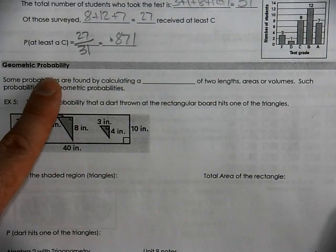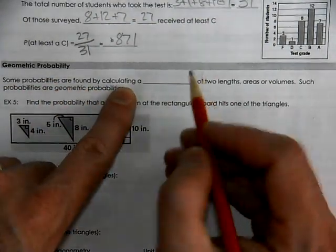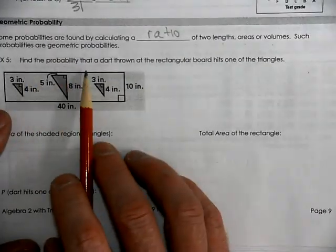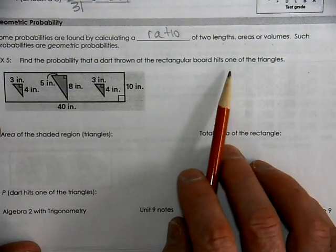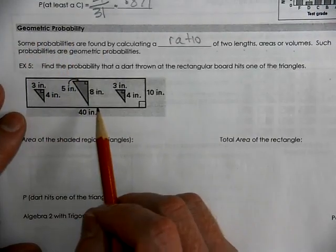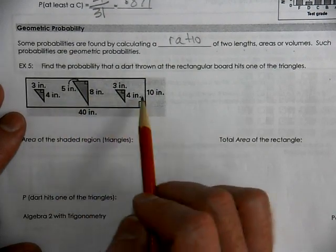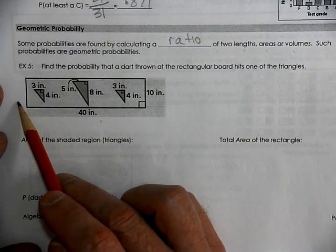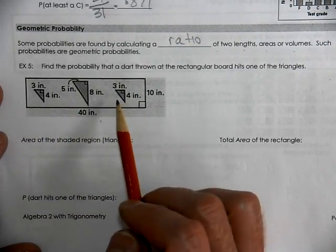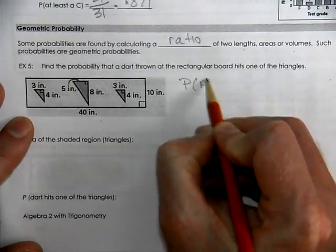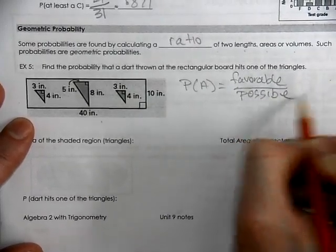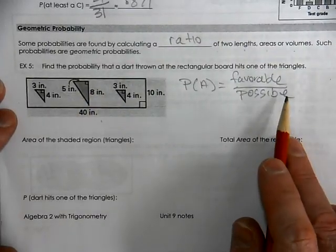Next we have geometric probability. Some probabilities are found by calculating a ratio of two lengths, areas, or volumes. So we're going to find the probability that a dart thrown at a rectangle board hits one of the triangles. Now you need to understand that geometric probability is all random. So you're not allowed to aim. And if a dart does not land inside of the box, it's not calculated. We don't consider those. We only consider those that are inside the box. So remember that probability is favorable over possible. So we need the favorable space compared to the possible space.